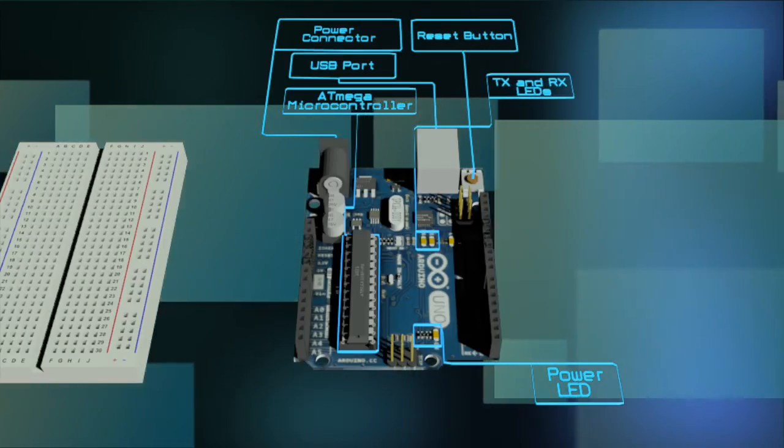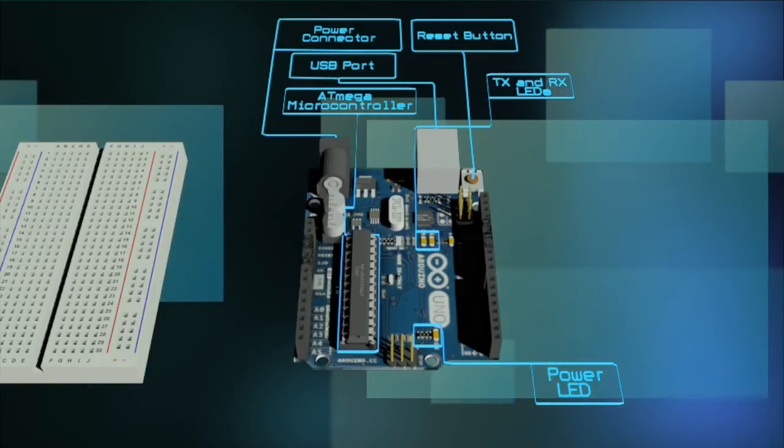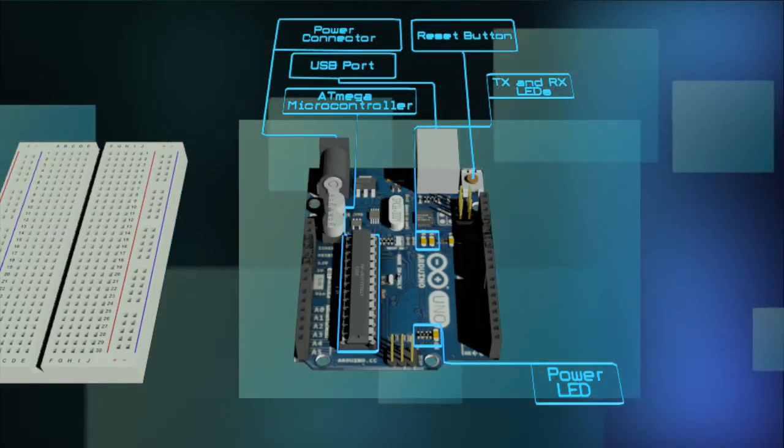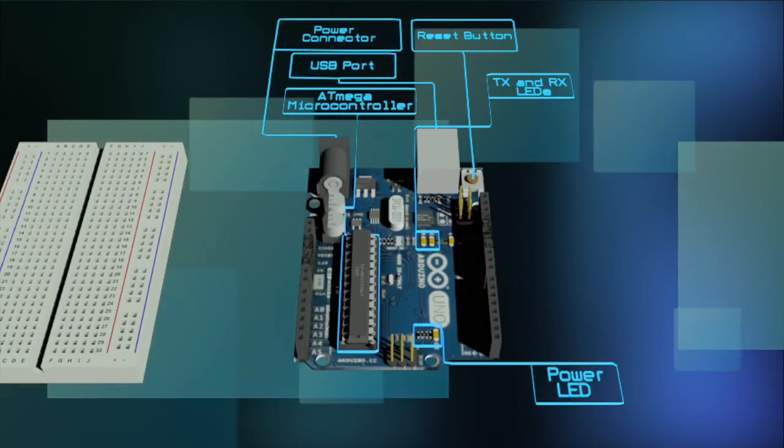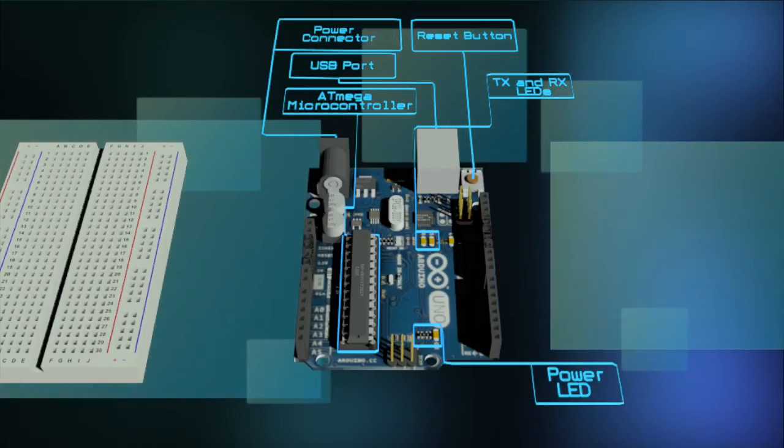The TX and RX LEDs are LEDs that indicate communication between your Arduino and your computer. They usually flicker rapidly during sketch upload as well as during serial communication. They can be useful for debugging.